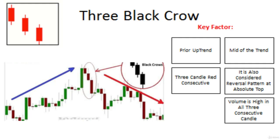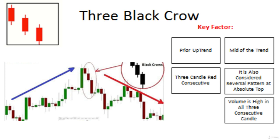Now we discuss another continuation pattern in three candlestick patterns, called three black crows. As the candlestick formation shows on your screen, there are three red candles in a series and in an identical shape. These three candles are known as three black crows and signify a continuation pattern. If these three candles form at the absolute bottom or absolute top, they also indicate a reversal pattern. As shown in the chart, at the absolute top, three consecutive red candles of identical size signify a reversal of trend.